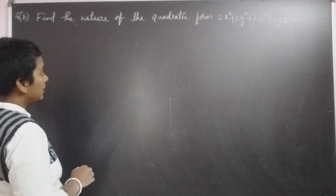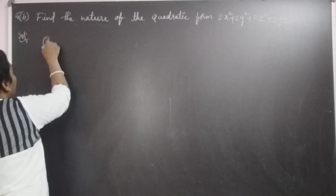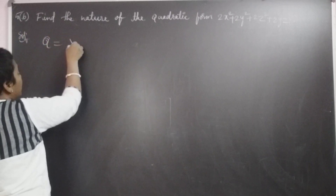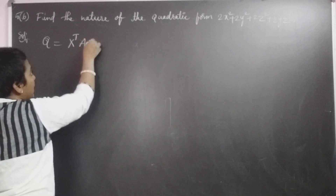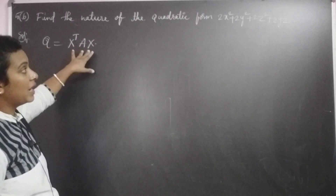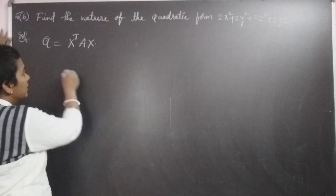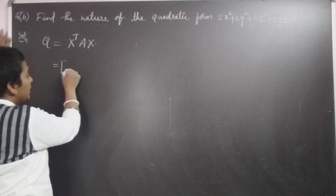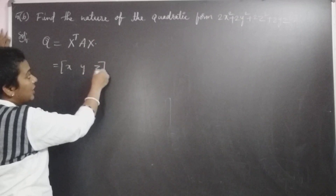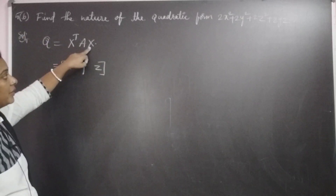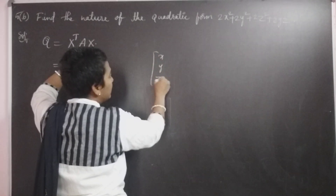First we can write the quadratic form equation. Q is equal to x transpose A into x, where A is a coefficient matrix and x is a column matrix. Here x column means x is involved in three variables x, y, z. So x is a column matrix containing x, y, z.